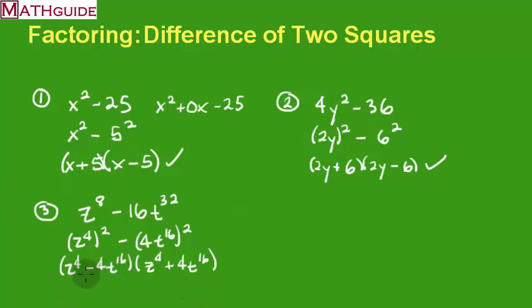I'm going to leave this guy alone and bring that down in a moment, but I'm going to factor this guy. What are the two factors? Well, z squared times z squared is z to the fourth. 2 times 2 is 4. This is going to be t to the eighth times t to the eighth. Because I multiply those, I'm going to add the exponents and get t to the 16th. Remember, one's positive, one's negative.